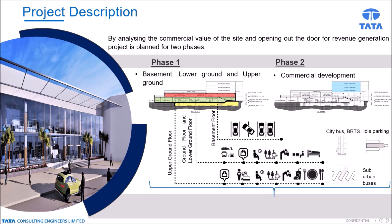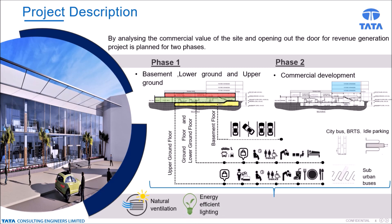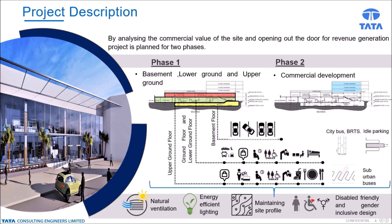Considering the usage of the building, the design is focused on achieving natural light and ventilation, and utilizing daylight. Most common areas are designed to achieve natural ventilation. The building is planned without altering the existing ground levels of the site.